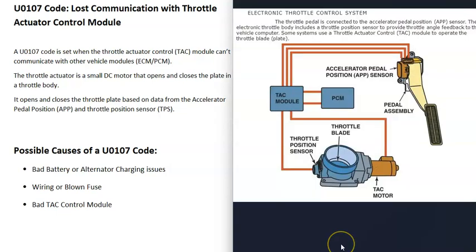Inside many vehicles now, they got rid of that cable. Basically there's a sensor down on the gas pedal, and when it's pressed, it sends this information to the throttle actuator control module, which along with the PCM or ECM is controlling a small motor that opens or closes that butterfly plate, basically replacing the cable that the older system had.